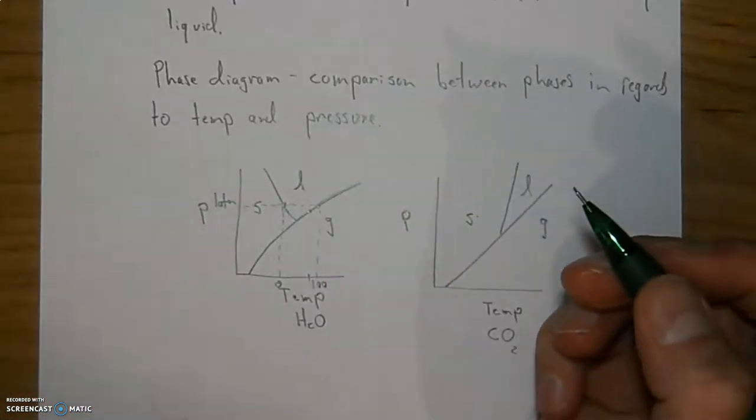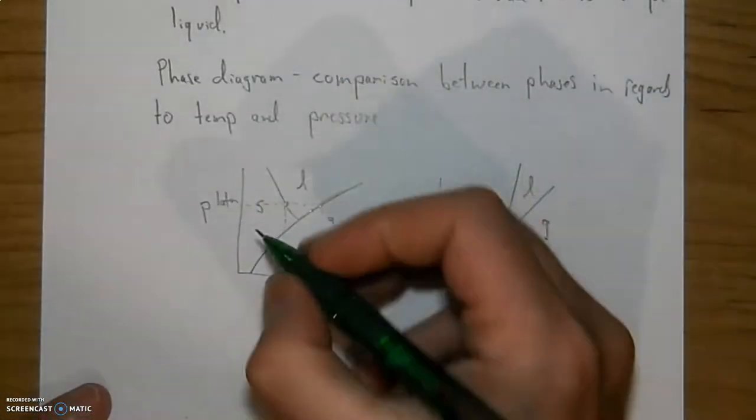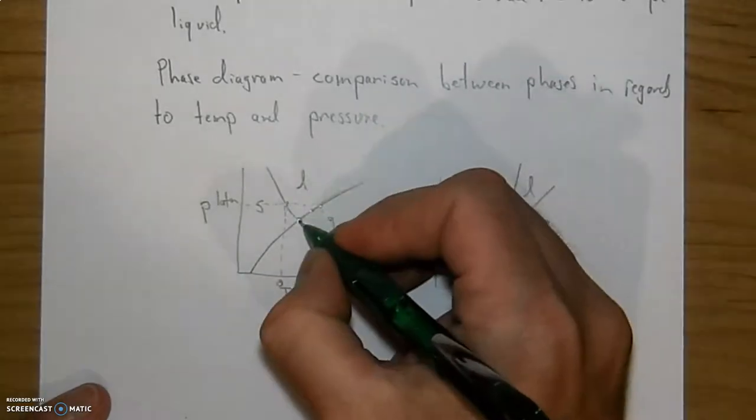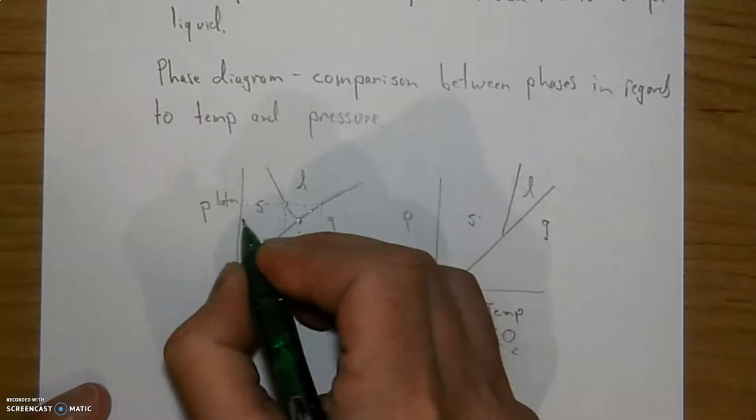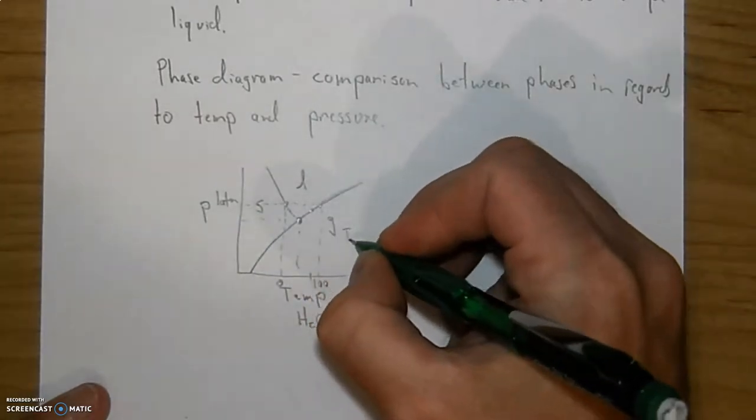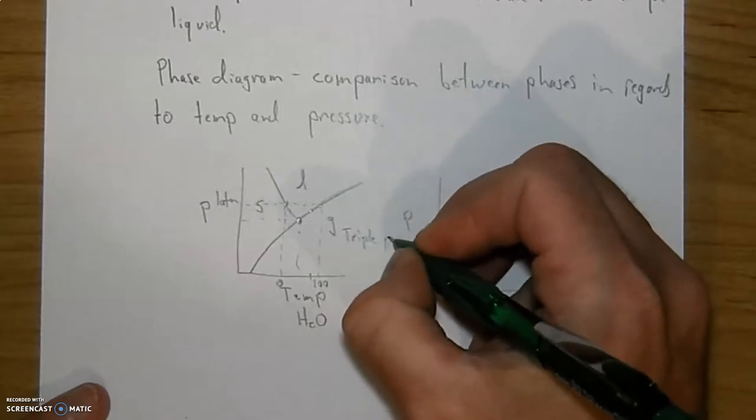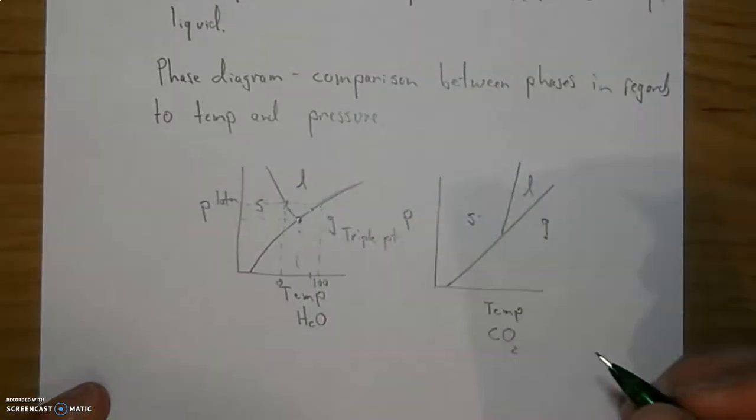Now, a couple other things that you probably have heard about before. This little point here is a very specific location at some temperature and pressure. It's called the triple point. In which you get all three phases going on at the same time.